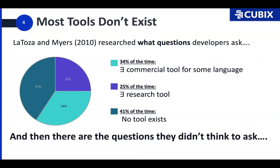And to put some numbers to this, LaToza and Myers in 2010 researched what questions developers asked and found only a third of the time does a tool exist in some language, only a quarter of the time is a research tool, half the time there's no such tool anywhere, and then of course there are all the questions that the developers didn't think to ask.